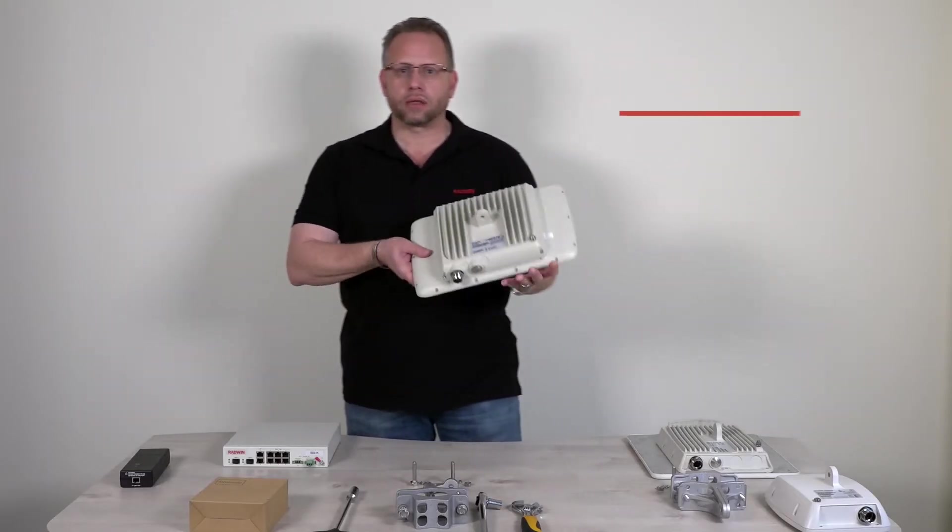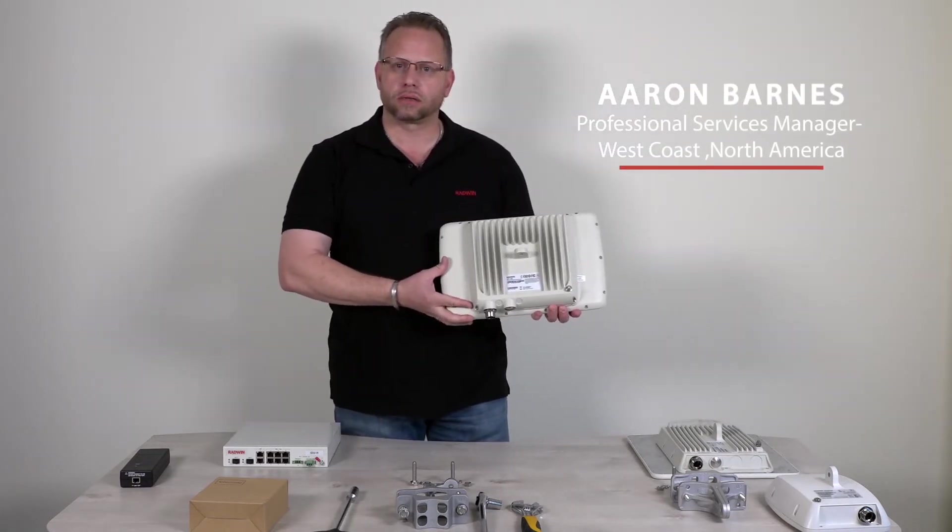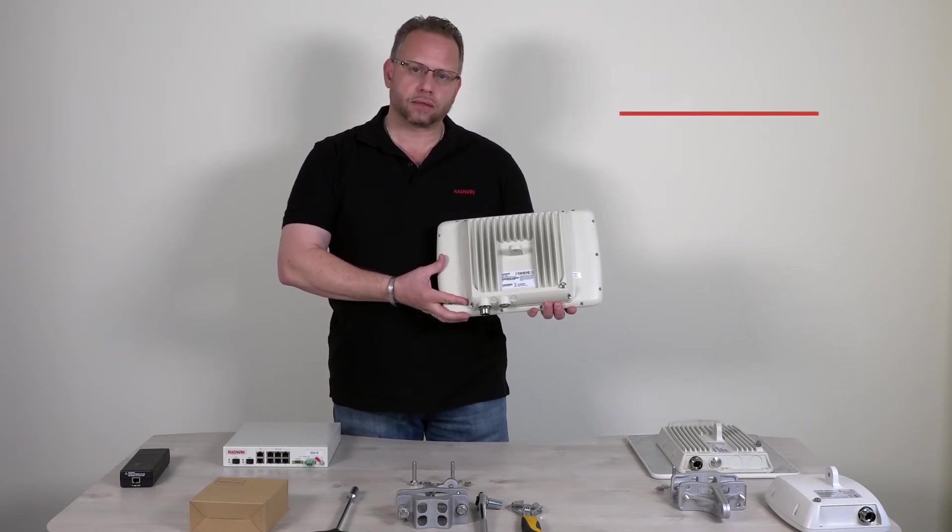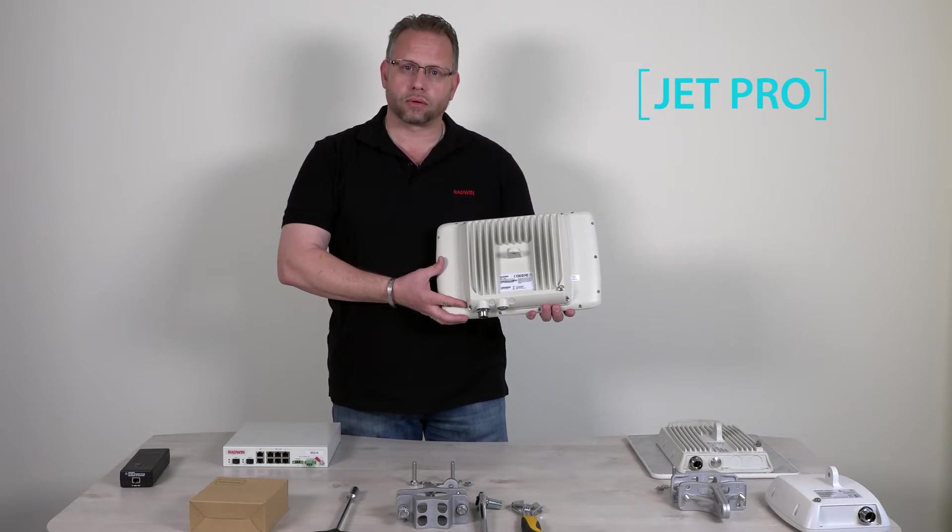I'd like to introduce you to the Radwin Jet. The Radwin Jet Base Station comes in two versions, the 750 and the 250. We also call them the Pro and the Air.